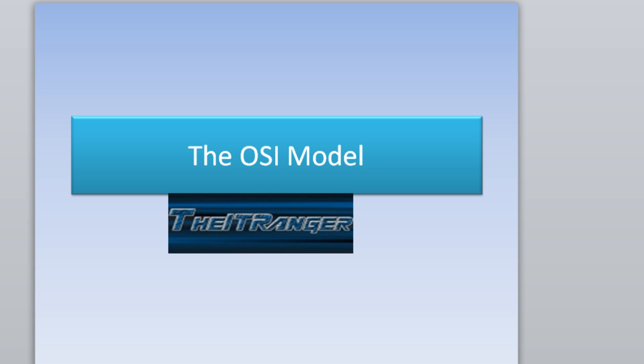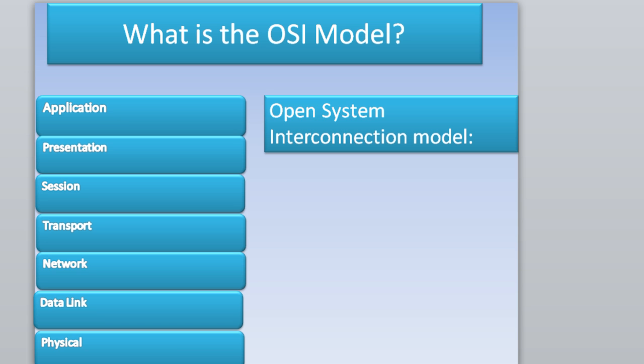You definitely need to be familiar with the OSI model because every IT field, computer field, or whatever you're doing is going to involve the OSI model — knowing what each layer represents and how it fits into the big picture. So what is the OSI model? The OSI model is an Open System Interconnection model — that's what OSI stands for — and it's constructed of seven layers.